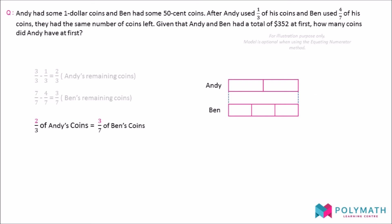We then add back the missing units to reflect the total number of units they have, adding the previously used 1 unit for Andy and 4 units for Ben.